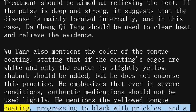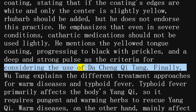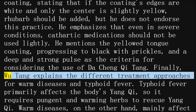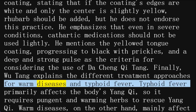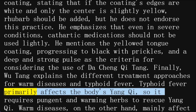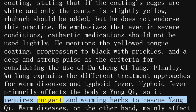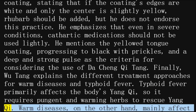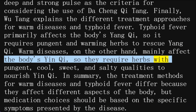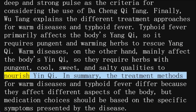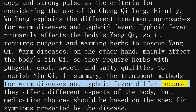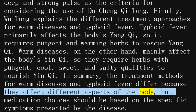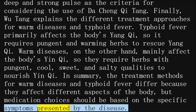He mentions the yellowed tongue coating progressing to black with prickles, and a deep and strong pulse as the criteria for considering the use of Da Cheng Qi Tang. Wu Tang explains the different treatment approaches for warm diseases and typhoid fever. Typhoid fever primarily affects the body's yang qi, so it requires pungent and warming herbs to rescue yang qi. Warm diseases, on the other hand, mainly affect the body's yin qi, so they require herbs with pungent, cool, sweet, and salty qualities to nourish yin qi. In summary, the treatment methods for warm diseases and typhoid fever differ because they affect different aspects of the body, but medication choices should be based on the specific symptoms presented by the disease.